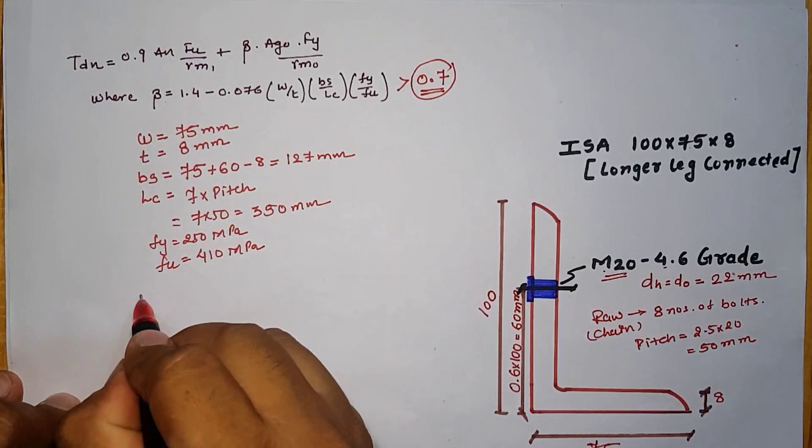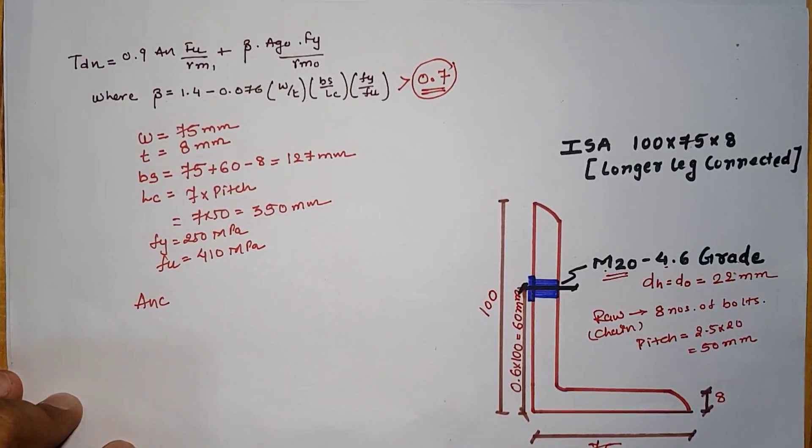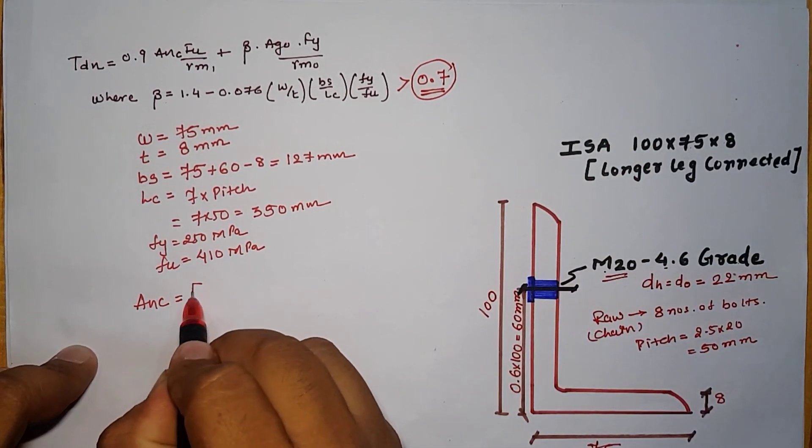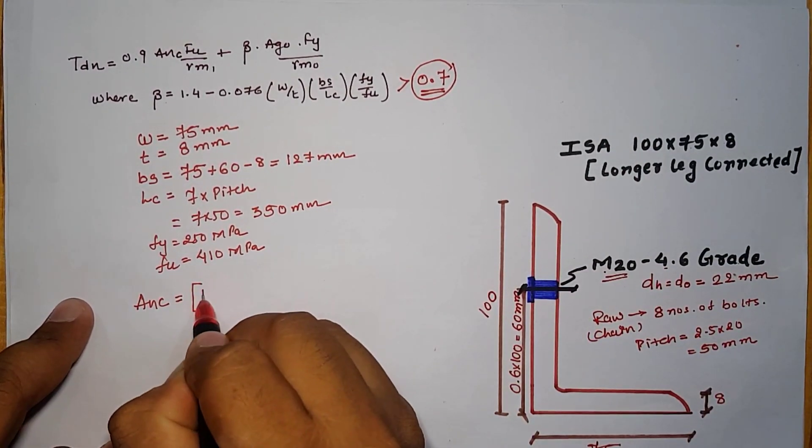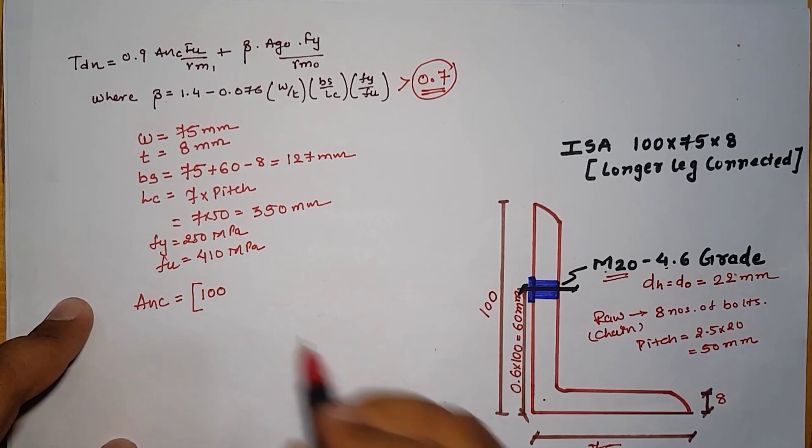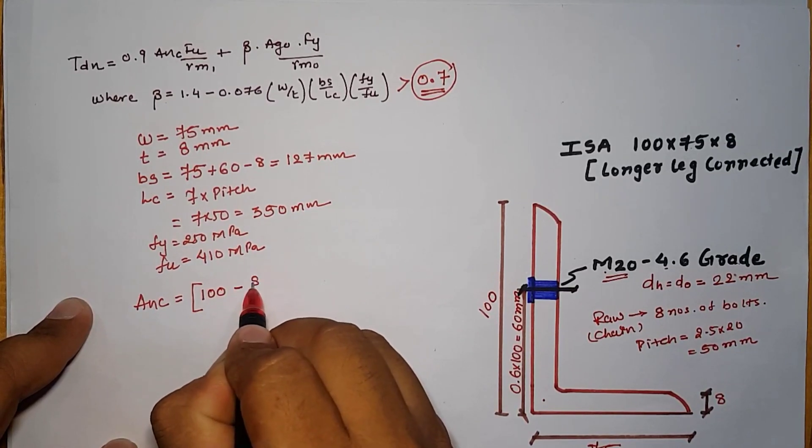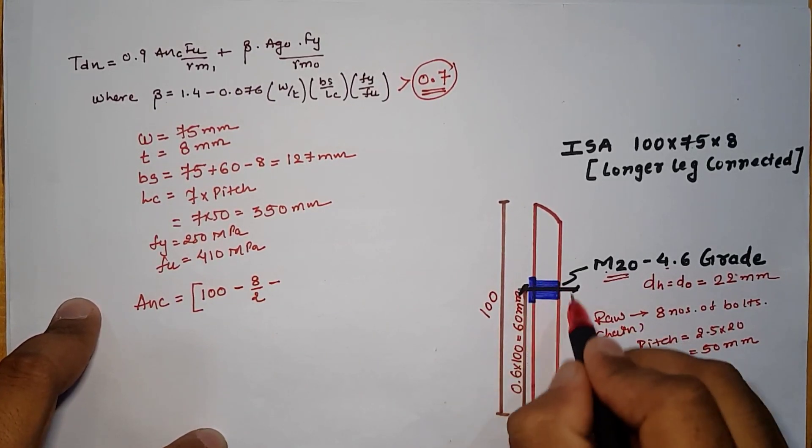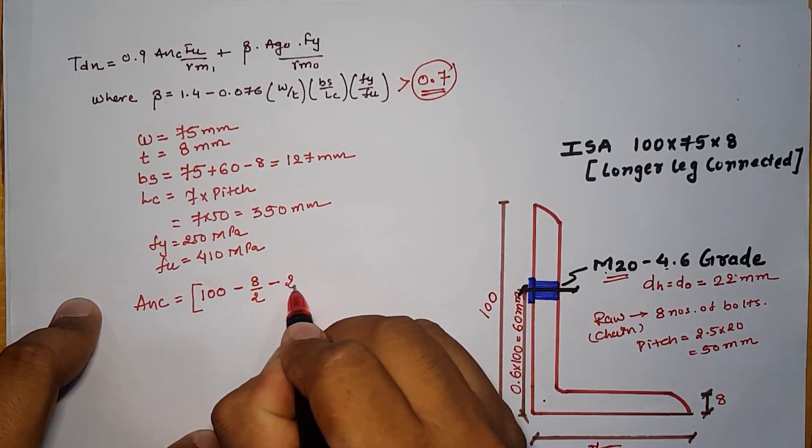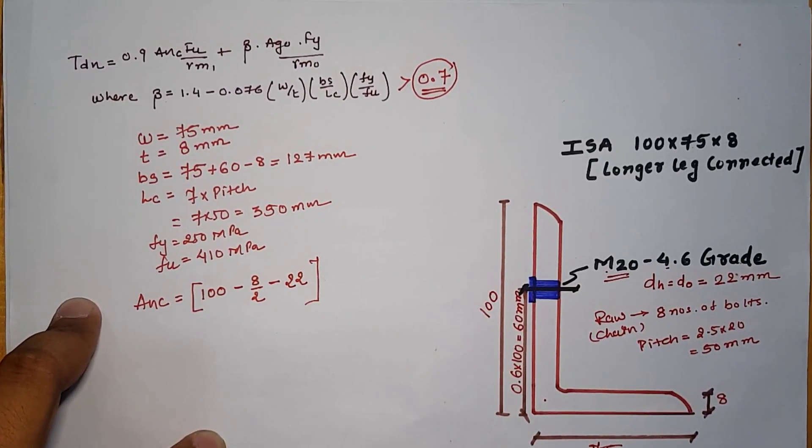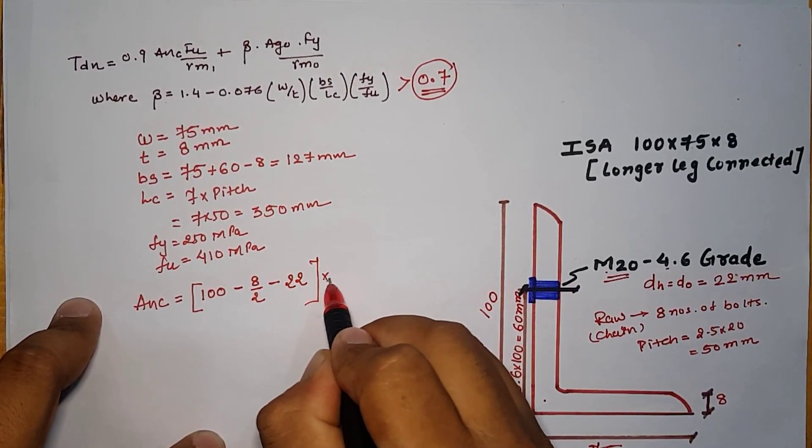Let us go with the ANC value. Our connected leg is 100 mm. Area of the connected leg is 100. We have to remove T by 2 from the net area as well as our 22 mm diameter is connected through 100 mm plate.